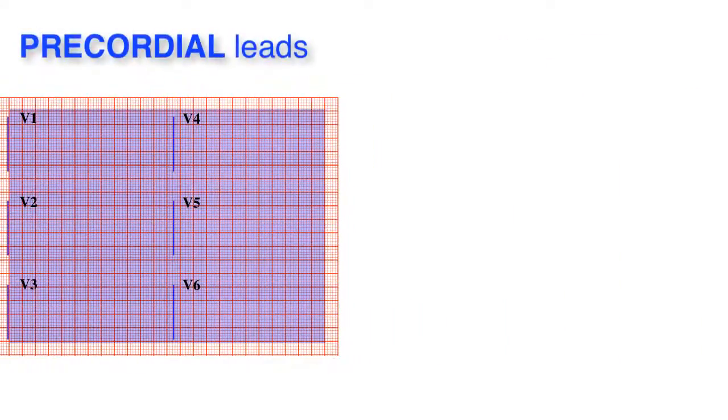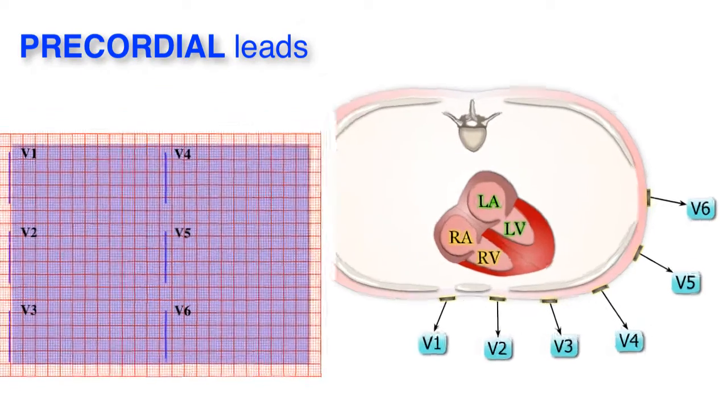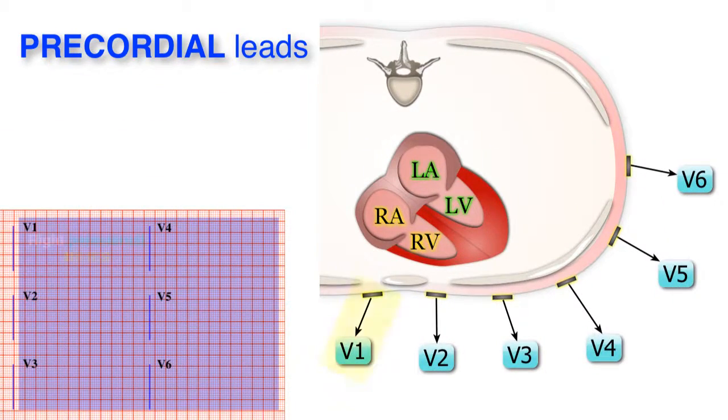Now let's talk about the precordial leads. The six unipolar precordial leads, V1 to V6, are placed on the thorax like in this diagram here. More precisely, V1 is placed at the 4th intercostal space on the right parasternal border. V2 is adjacent to V1 but on the left parasternal border.